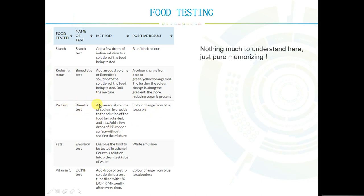Next up is testing for proteins, called the Biuret test. You're going to add an equal volume of sodium hydroxide to the solution being tested, and then you mix. Then you add a couple of drops of 1% copper sulfate without shaking the mixture. The color change, if protein is present, will be from blue to purple.